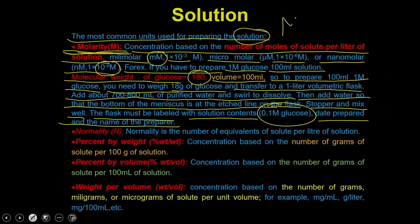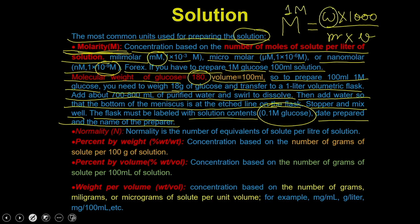Molarity can be calculated simply using the formula: W × 1000 divided by molecular weight × volume of solution. If you put 1 molar, the molecular weight is 180, and the volume is 100 ml, then W equals 18 grams. This is straightforward because if the molecular weight of a compound is dissolved in 1 liter, it gives a 1 molar solution.